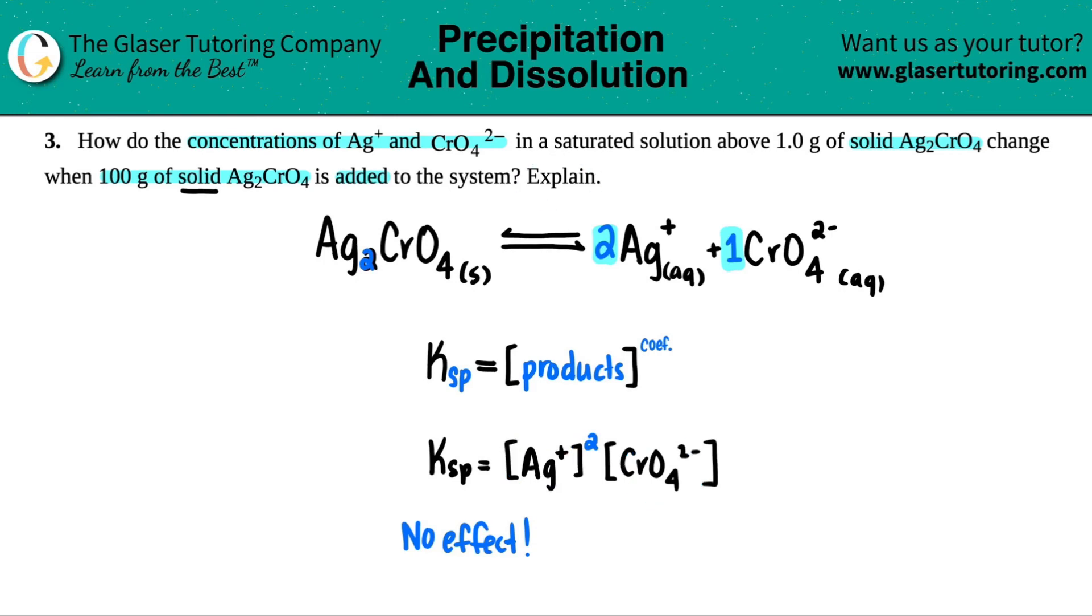Then just explain this is because, maybe I'll just say because, the Ag2CrO4 solid is not included in the KSP equation. So you can add as much Ag2CrO4 solid, but since it's not in the equation, it doesn't matter.